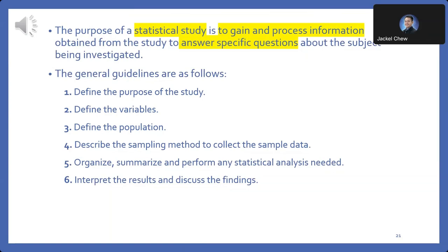Guideline 2: Define the variables. Identify the characteristics or factors you'll be studying. These are the variables that may change or influence the outcome. Guideline 3: Define the population. Determine the group or population from which you'll gather data. This is the larger group that your findings will apply to.